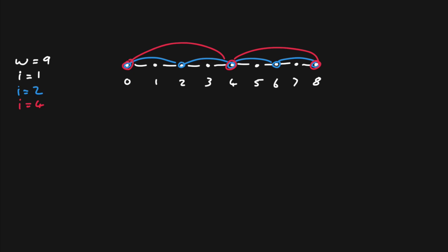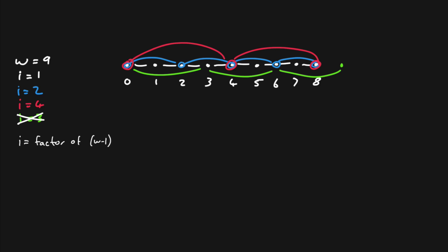We can't just use any value for our increment. For example, if we tried to use a value of 3 we'd be creating vertices at 0, 3, 6, and then we'd find there's no point 9 to create a vertex at — so that clearly doesn't work. We can say that the increment i must be a factor of width minus 1. So with width 9, i must be a factor of 8 — in other words it can be 1, 2, 4, or 8, but nothing else.